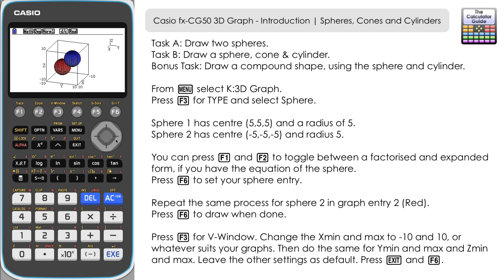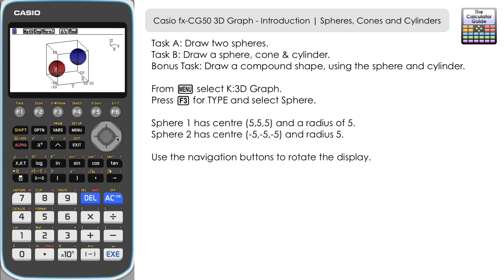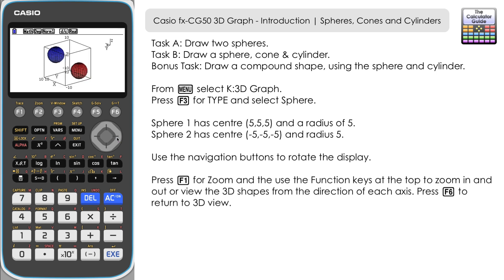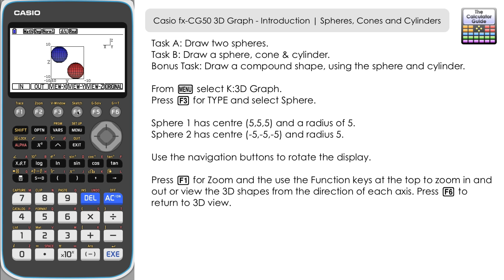Here we have our two spheres. You can rotate using the direction pad, and zoom in and out by pressing F1 and F2. You can also view from different axis directions — press view x to see the y and z axes, with the x axis going in and out of the screen. Press view y to change that perspective, and F5 for view z which gives what looks like a plan view of our spheres.